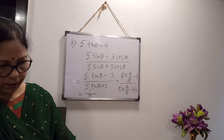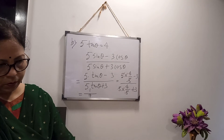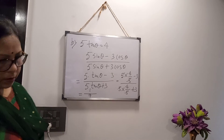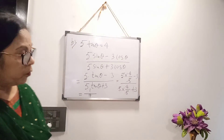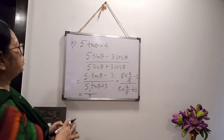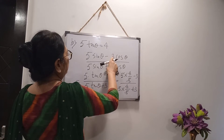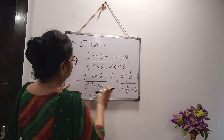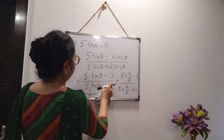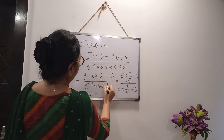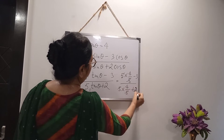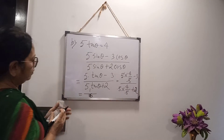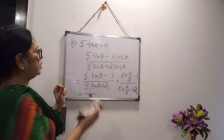Your answer will be 1/7. But wait — in your question paper, there is 2cosθ, not 3cosθ. So it becomes (5tanθ - 2)/(5tanθ + 2), which gives (4 - 2)/(4 + 2) = 2/6 = 1/6. The answer will be 1/6.